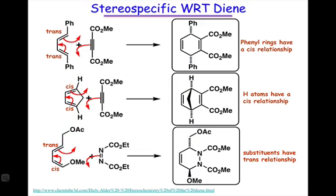The important take-home message from these observations of stereospecificity is that they strongly support that the bond-making and breaking processes in the Diels-Alder reaction are concerted. If the bond-making processes were not concerted, then the substituents would have time to rotate as the bonds were being formed and we would see mixtures of trans and cis products. Because we only observe one diastereomer, we can conclude that the bond-making process is likely concerted and substituents are forced to maintain their stereochemistry from reactant to product.